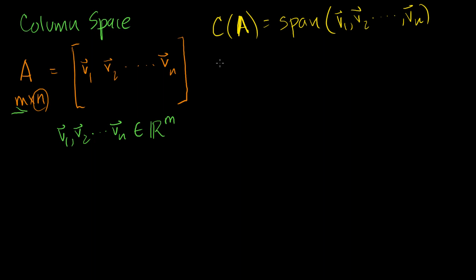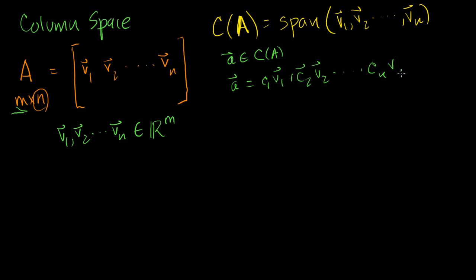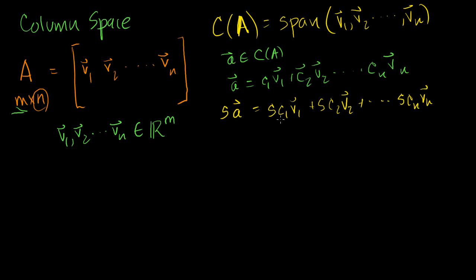Let's say vector A is a member of the column space of A, meaning it can be represented as a linear combination: A = C1·v1 + C2·v2 + ... + Cn·vn. Is this closed under scalar multiplication? If I multiply A times some scalar S, then S·A = SC1·v1 + SC2·v2 + ... + SCn·vn, which is once again just a linear combination of the column vectors. So S·A is clearly a member of the column space of A.